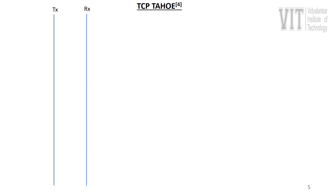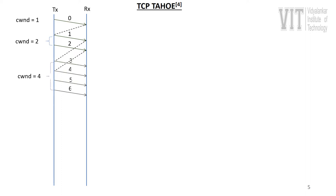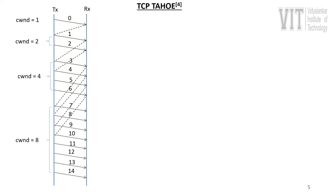Suppose there is a transmitter and a receiver. The transmitter initially has a congestion window size of 1. It sends packet 0 and receives an acknowledgement from the receiver. When the acknowledgement is received, the congestion window size doubles to 2. So 2 packets can be sent this time and acknowledgements are received. When acknowledgements for both are received, the congestion window doubles again to 4. Then 4 packets are sent, acknowledgements received, and the congestion window becomes 8. 8 packets will be sent.